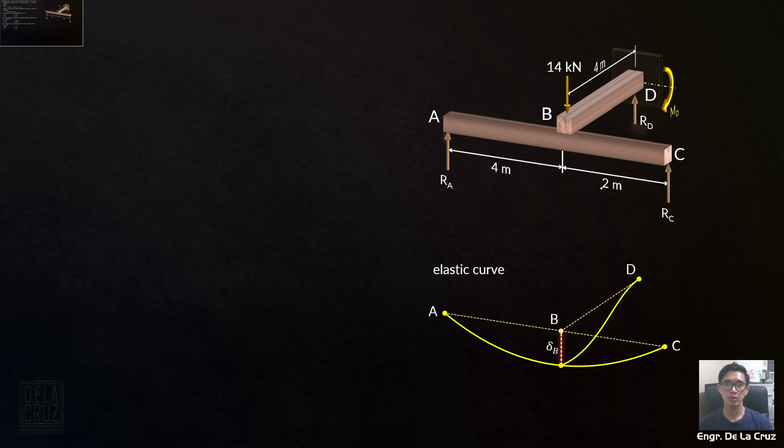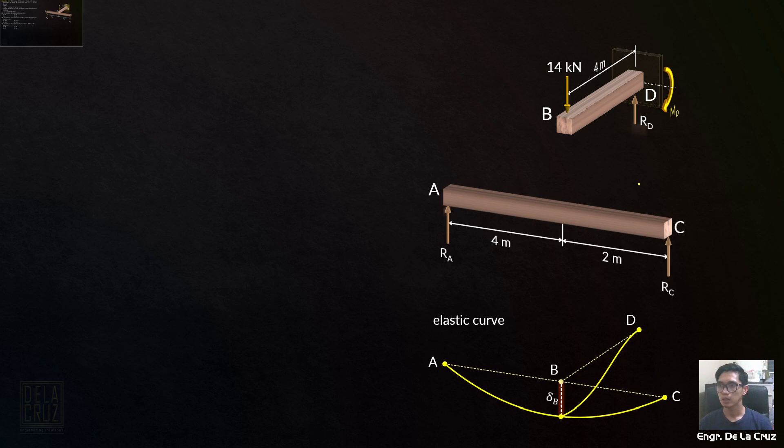If we separate the two beams, so you have a reaction here and this cannot be equal. They can't be equal because if you think about it, if they're equal, then you'll have no moment at D. It will be removed. So the value is different. Let's call it Rb. And that reaction here will be passed to beam AC. That's what happens.